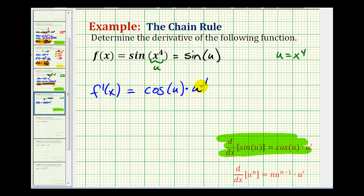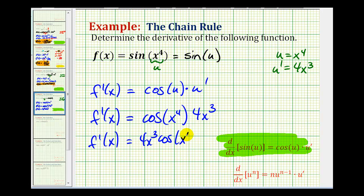So notice how we will have to determine u'. Well, u' would be 4x to the third. So now we'll rewrite our derivative function in terms of x rather than u. So f'(x) is going to be equal to cosine u, but u is x to the fourth, and u' is 4x cubed. Let's go ahead and rearrange these terms. Let's write it as 4x cubed cosine x to the fourth.